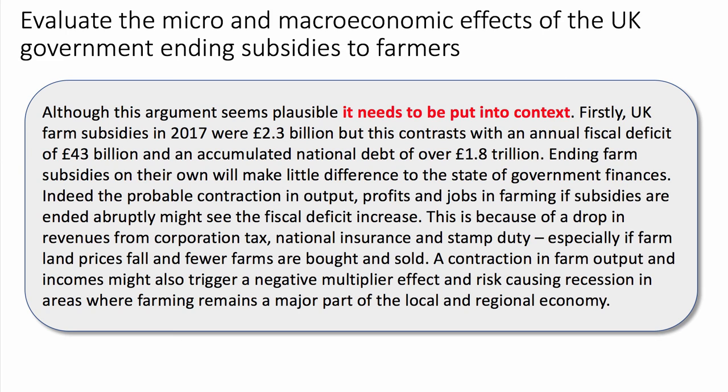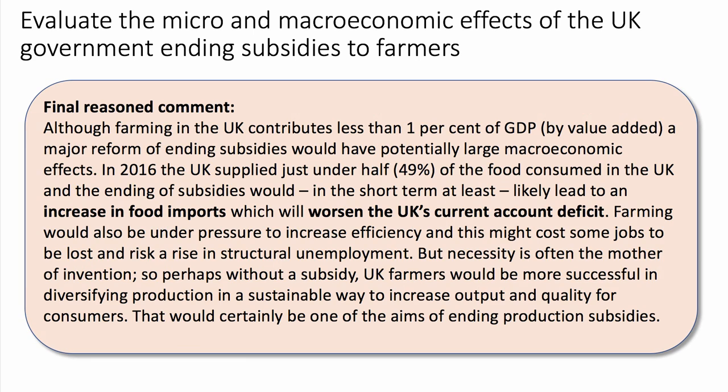The accumulated national debt is £1.8 trillion, so ending farm subsidies is a drop in the ocean and will make little difference to government finances on its own. Indeed, if there's a recession in farming the deficit might actually go up, because people in farming and rural areas would pay less in corporation tax, National Insurance, VAT, and stamp duty. Triggering a recession in farming could have a negative multiplier effect, particularly in parts of the country where farming remains a big part of the regional economy.